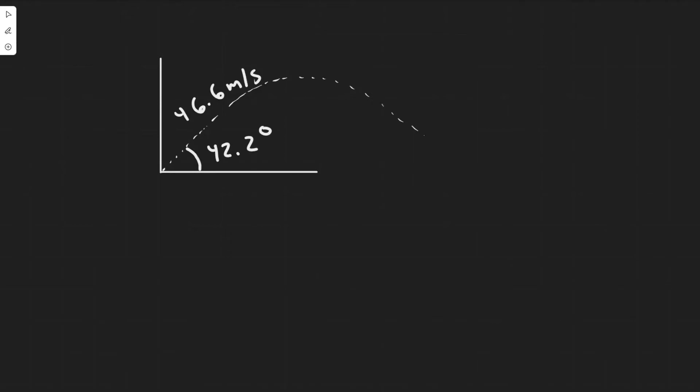In this problem, a projectile is fired with an initial speed of 46.6 meters per second at an angle of 42.2 degrees above the horizontal on a long flat firing range. We're going to determine several things: the maximum height reached, the total time in the air, the total horizontal distance covered, and the velocity of the projectile 1.5 seconds after firing.